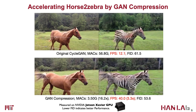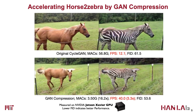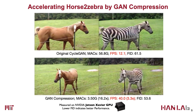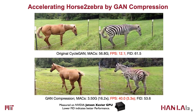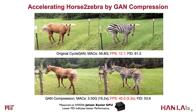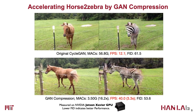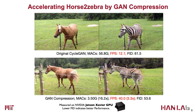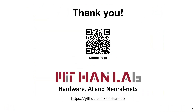GAN compression reduces the computation of CycleGAN by 16 times while fully maintaining the image quality. This is three times faster than the original model, achieving 40 frames per second on Jetson Xavier. Our code is released on GitHub — you are welcome to try it out.